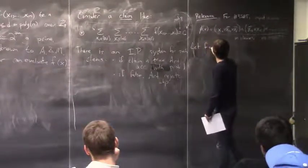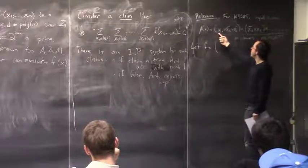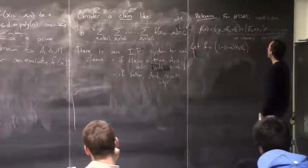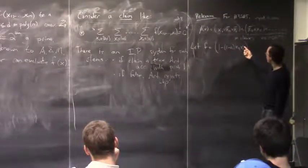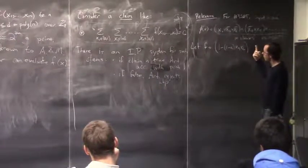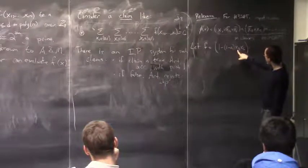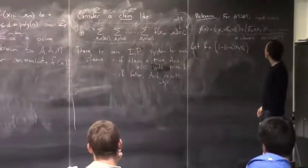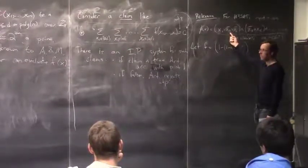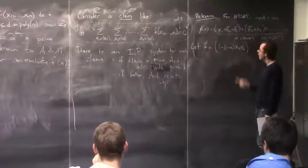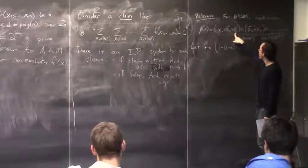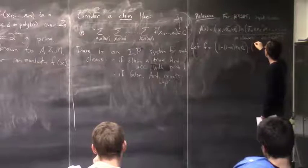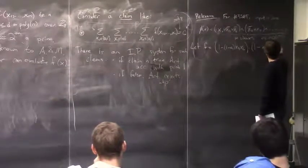For example, for the clause (x1 or x3-bar or x6-bar), we'd write 1 minus (1-x1)·x3·x6. If all x's are 0 or 1, this product is usually 0, making the whole thing usually 1, except when x1=0, x3=1, and x6=1. So this is like an OR, which is 1 in most circumstances. Similarly, the second clause becomes (1-x2)·(1-x5), and so on. We multiply all terms together to get f. For a Boolean input x, f(x)=1 if x satisfies phi, else 0.